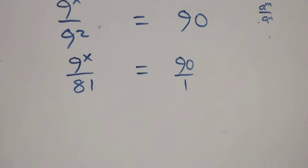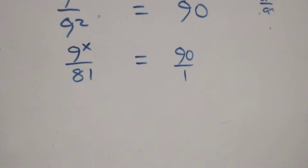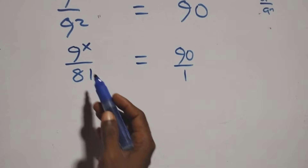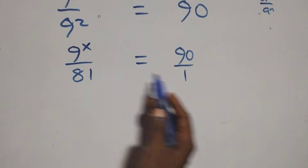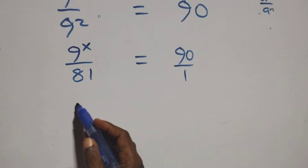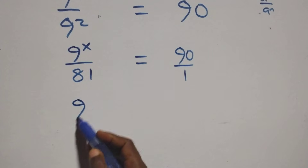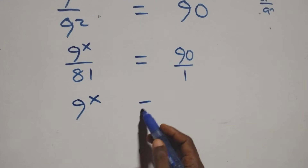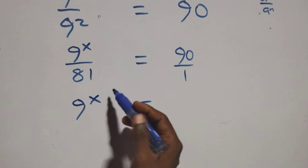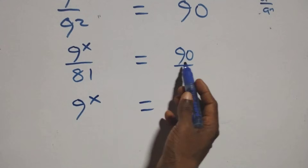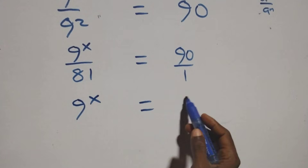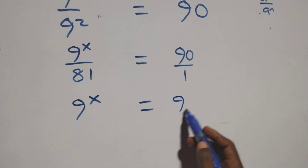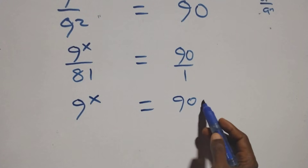The next step here we cross multiply. We have nine raised to power x times one, which is the same thing as nine raised to power x, equals ninety times eighty-one.